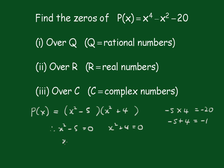So x here is equal to plus or minus the square root of 5, and here we've got x squared equals minus 4. Therefore, x equals plus or minus the square root of minus 4, which is plus or minus 2i.